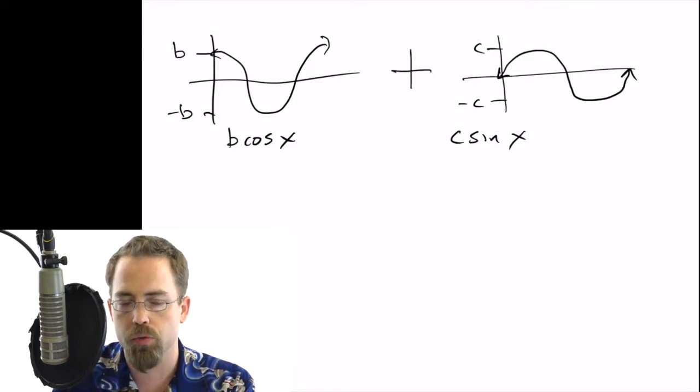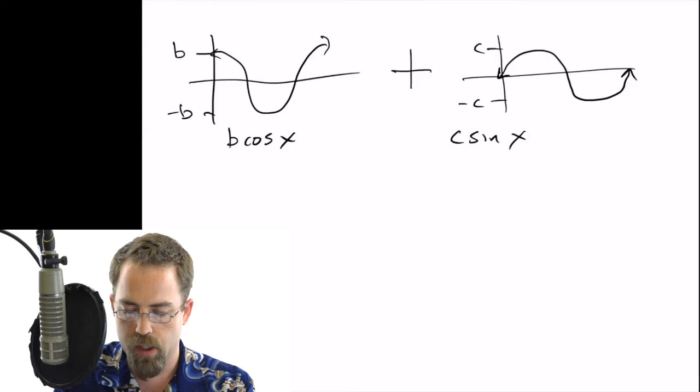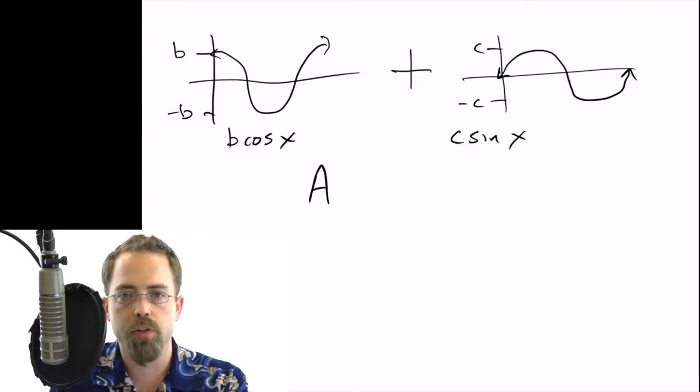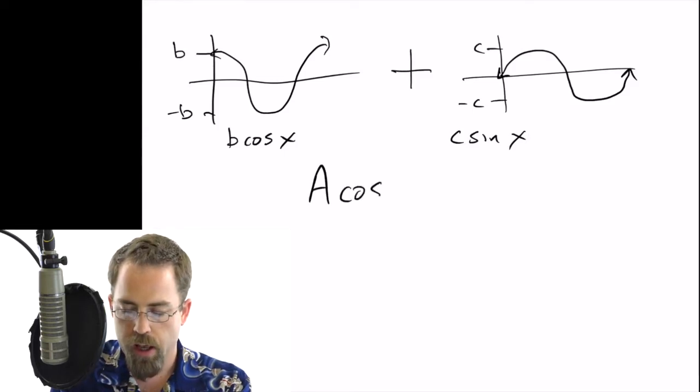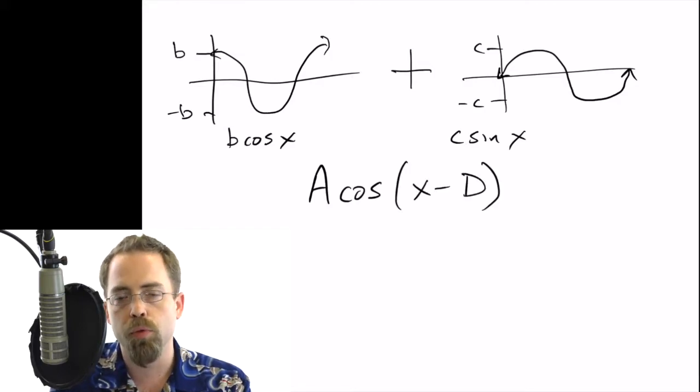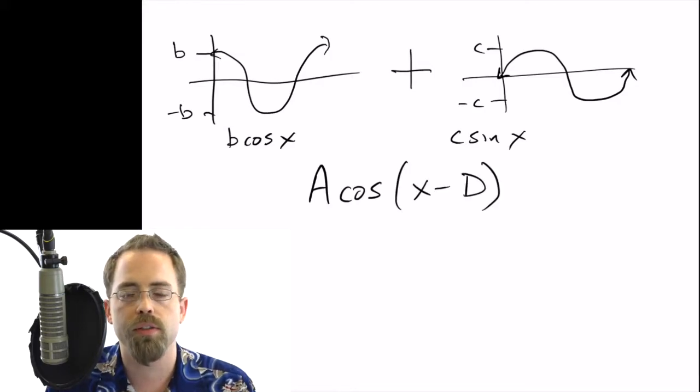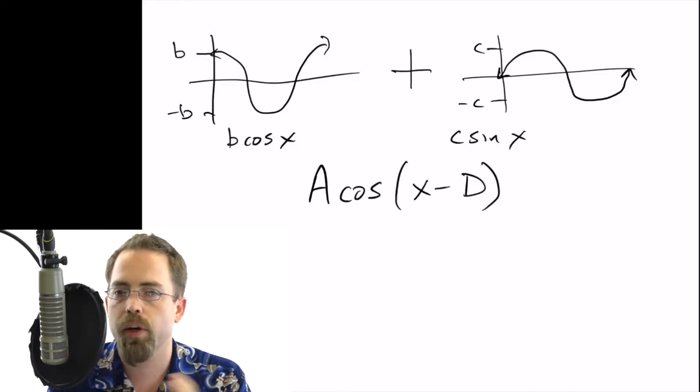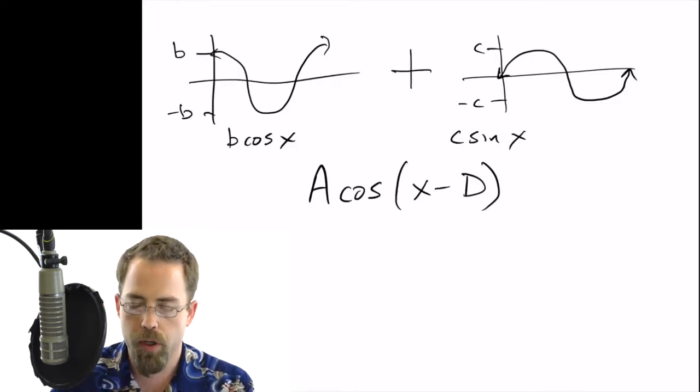But you can see that visually as well. So the question then is, what is the amplitude of this resulting cosine wave? And then what is the displacement? How much has it been moved left or right?